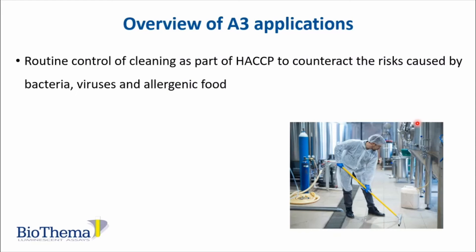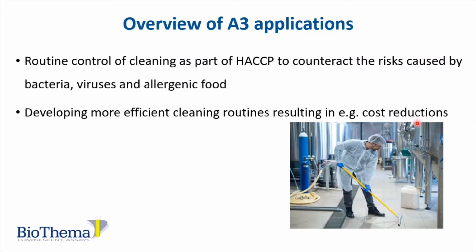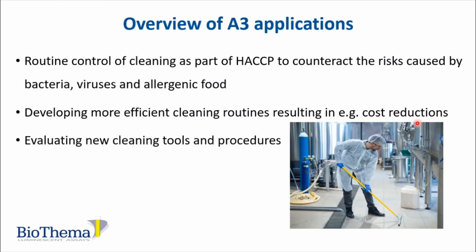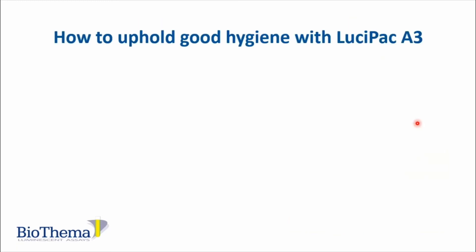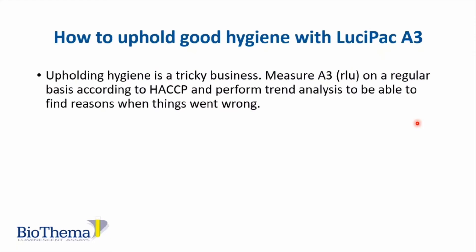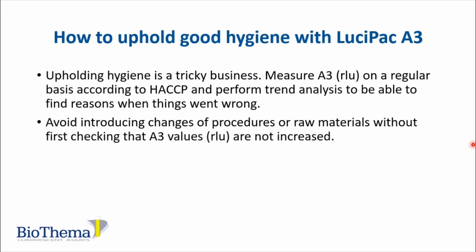Here is an overview of A3 applications: routine control of cleaning as part of HACCP to counteract risks caused by bacteria, viruses, and allergenic food; developing more efficient cleaning routines resulting in cost reductions; evaluating new cleaning tools and procedures; education of staff in hygiene and cleaning; and testing hand hygiene. Measuring A3 regularly according to HACCP and performing trend analysis helps find reasons when things went wrong. Avoid introducing changes in procedures or raw materials without first checking that A3 values in RLU are not increased.